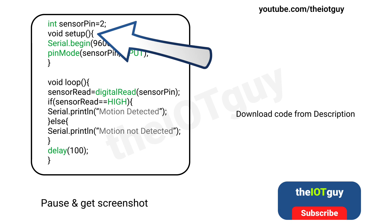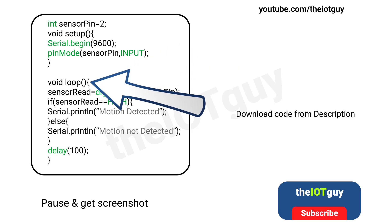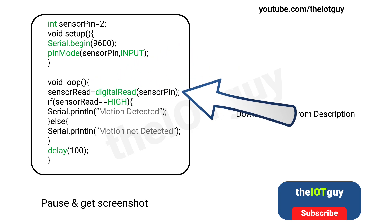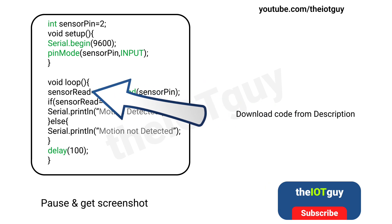In the void setup, we have set the serial data transfer to port 9600. Then in the pin mode, we have set our sensor pin to input. Now in the looping of the microcontroller, we are first reading the pin and then setting the read to sensor read variable. Then lastly, we are checking if the sensor read variable is high.